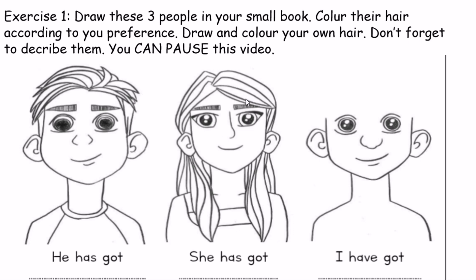Draw and color the hair. For example, number one — he has got hair of a certain color. For this girl, she has got — what color is her hair? She has got blonde straight hair. And this one is you. I have got — is your hair curly or straight? You draw yourself and then color it. Write and draw this in your small book.